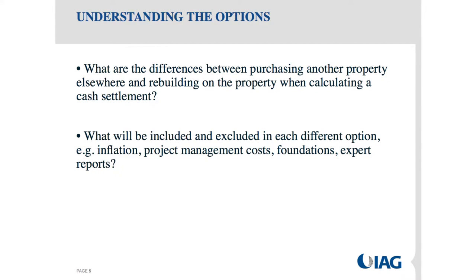There have been some questions put through to the hub. One question: what are the differences between purchasing another property elsewhere and rebuilding on the property when calculating a cash settlement? There will be some things included if you're rebuilding on your current site that may not be included if you're buying elsewhere. For example, retaining walls — if you have retaining walls and are going to reinstate on a site with retaining walls, they would be included. But if you're going to build on a flat site, they may not be. That again comes down to the conversation about what your intention is at the time of cash settlement.